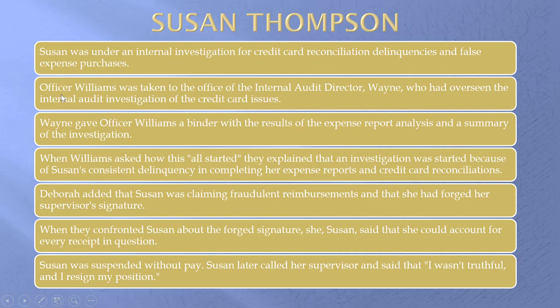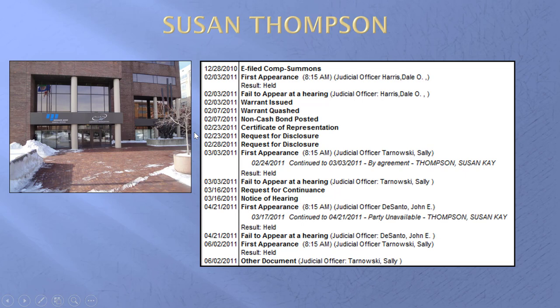Officer Williams got a binder and an explanation. They talked about Susan claiming fraudulent reimbursements and forging her supervisor's signature. He got a complete binder — everything there. It was March of 2010. It took until the end of 2010 for anything to even happen.